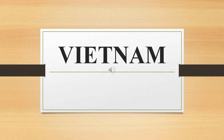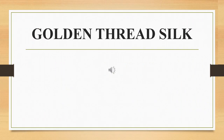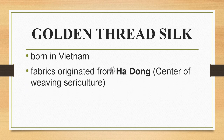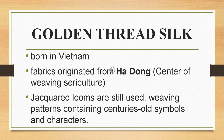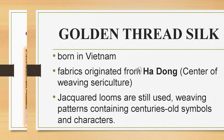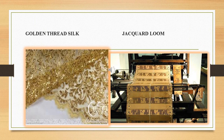Let us now discuss the fabric design of Vietnam and its crafts. Golden thread silk was born in Vietnam. It originated from Ha Dong, the center of weaving sericulture, or the art of silk production, and jacquard looms are still used, weaving patterns containing centuries-old symbols and characters. Below are pictures of golden thread silk and a jacquard loom, which is an apparatus for weaving yarn or thread.